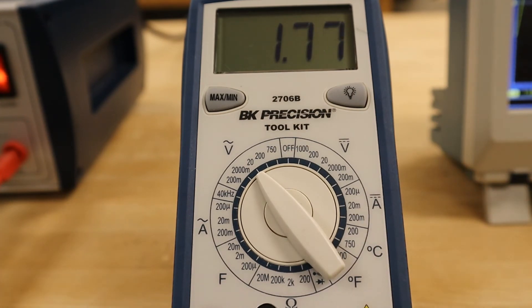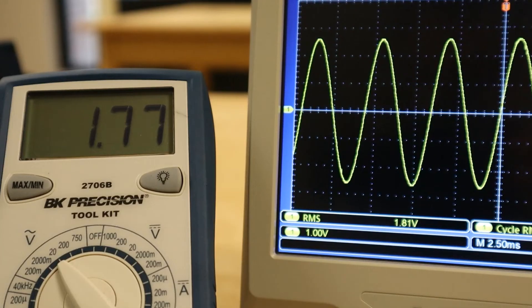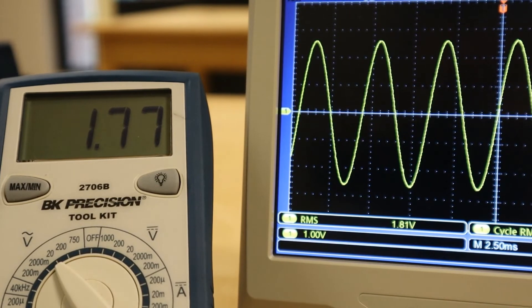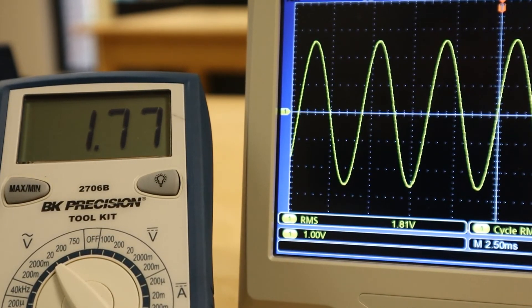However, the value the DMM is displaying in this AC mode is called root mean squared or RMS voltage, which is a special type of averaging for AC voltage that we will consider in more depth in the next procedure.